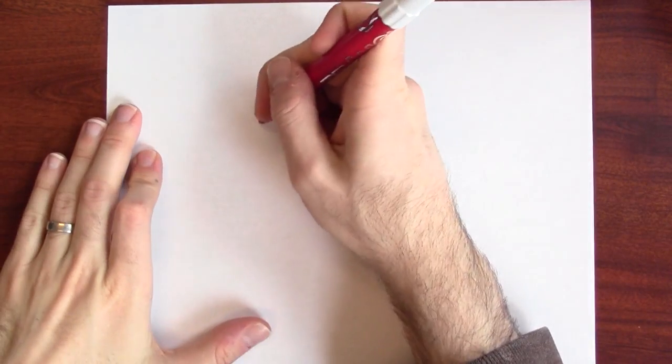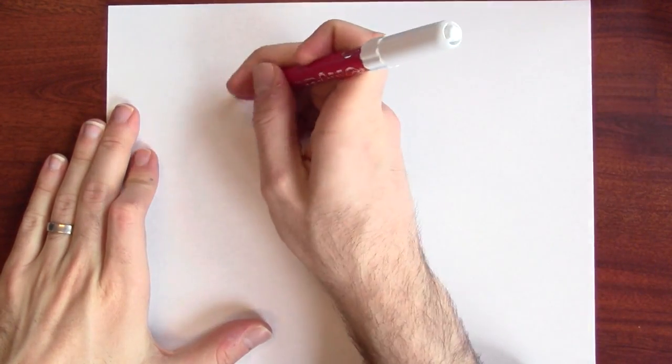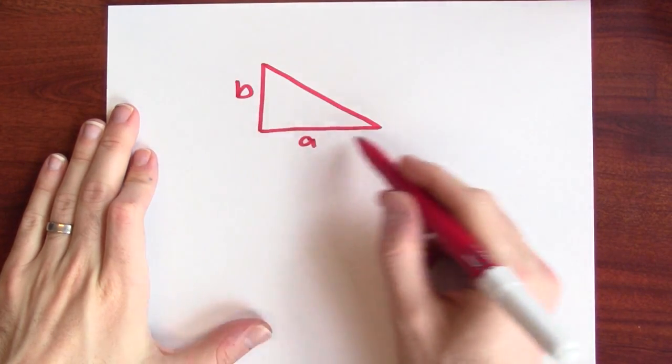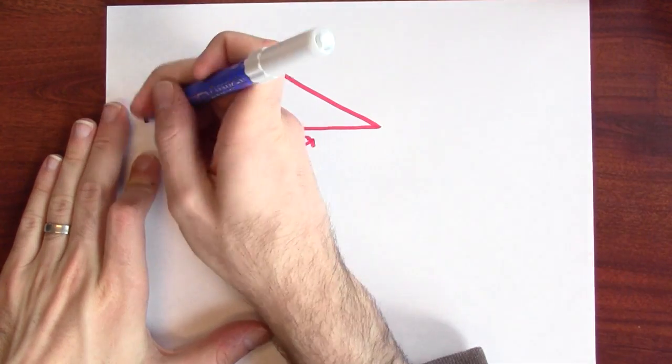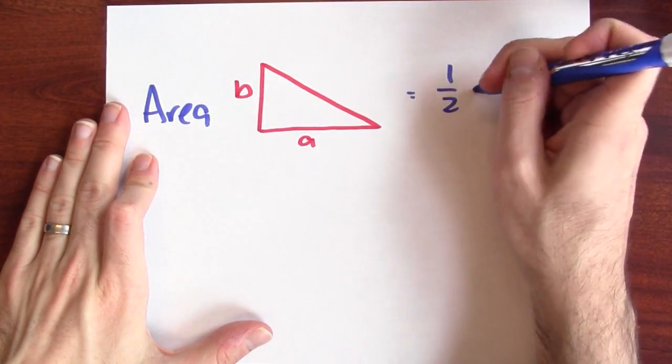So, what's the area of a triangle? Well, if we've got a triangle of height b and width a, the area of this triangle is 1 half ab.